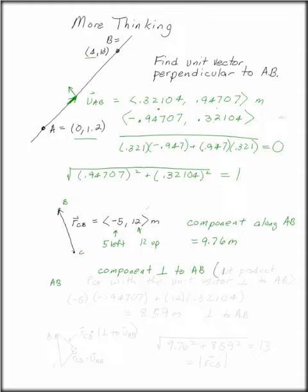We would find the dot product with the perpendicular that we found up there, the dot product with the unit vector perpendicular to AB. If we did that, we'd have negative 5 times .94707, remember we've switched this around, and 12 times .32104. That's the dot product of our position vector with our unit vector that we've switched around to find it perpendicular to AB. If you do that, you've got 8.59 meters. This is perpendicular to AB.